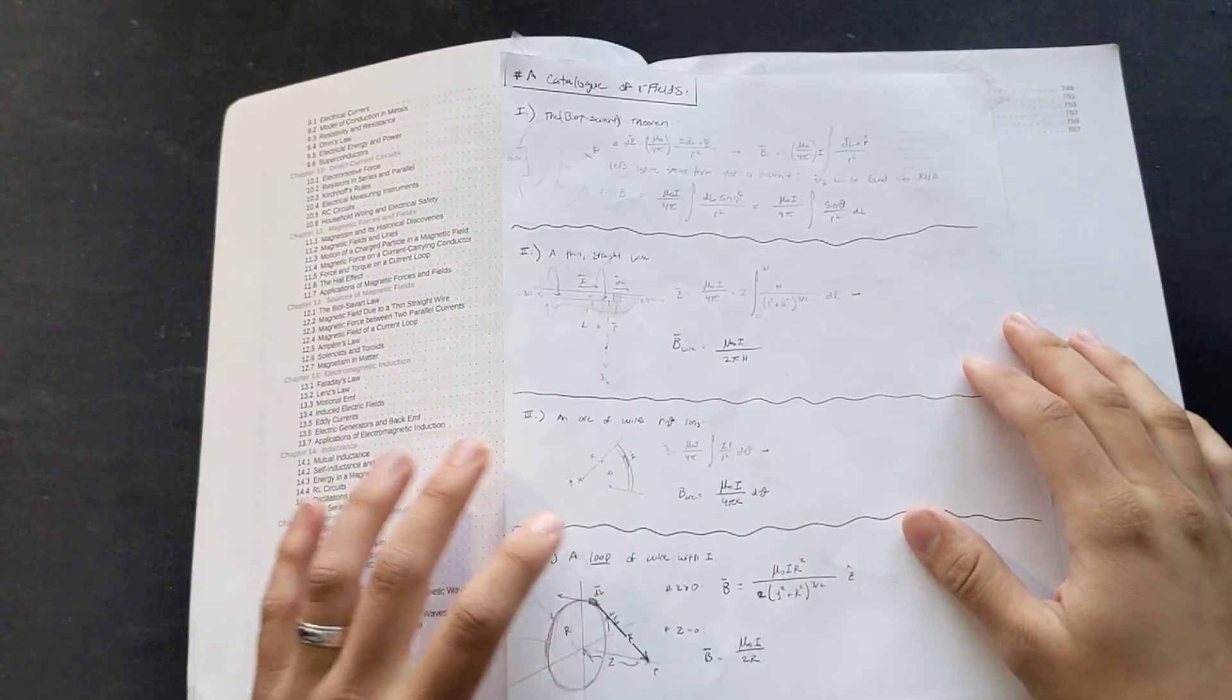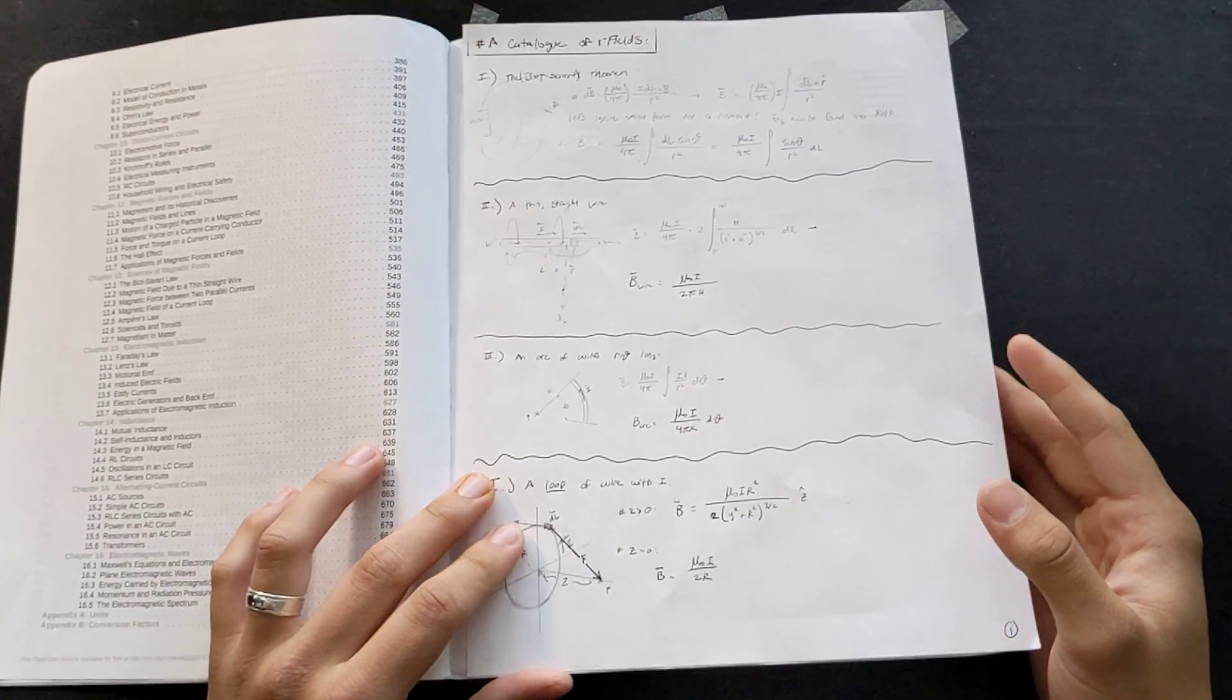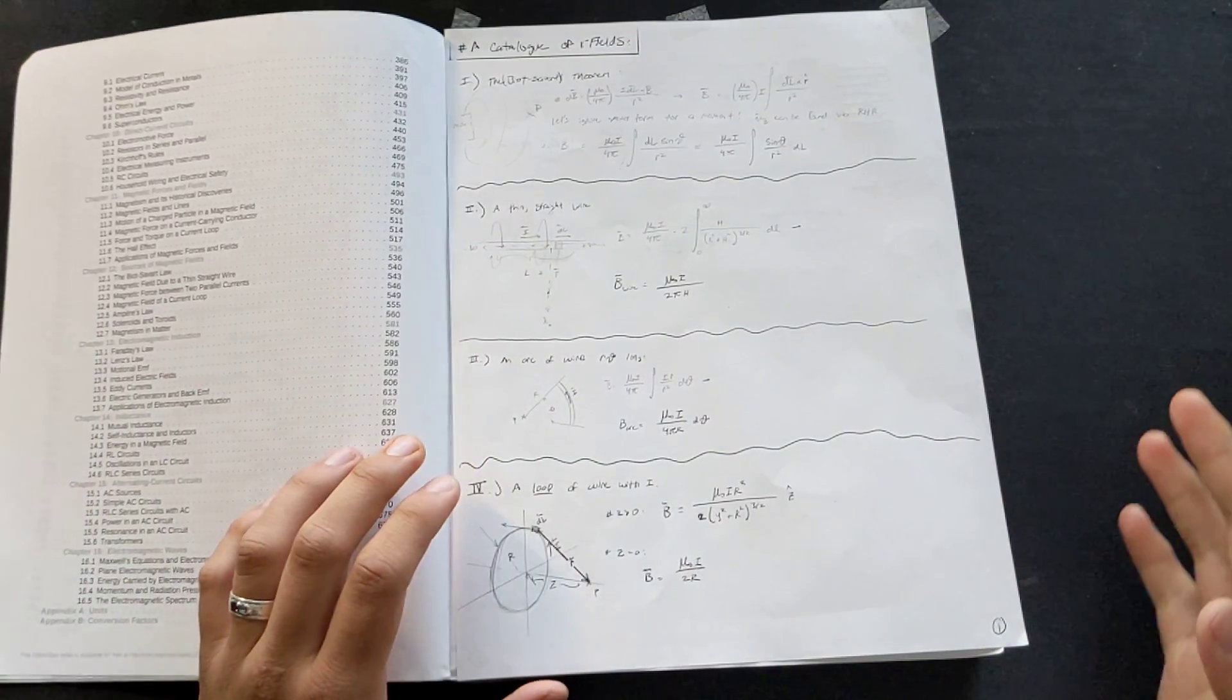These are magnetic fields, and what's really cool is they all stem from a single equation. And you plug in different parameters, and you can figure out things like, what does the magnetic field look like in a thin, straight wire? We all know there is one.